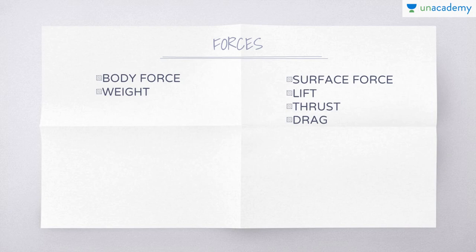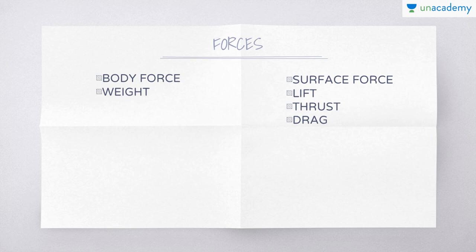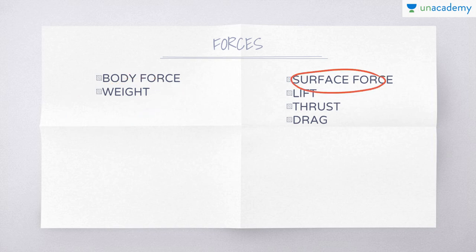Moving ahead to the forces that have an effect on airplanes. There are two general types of forces that may act on a body in unaccelerated or steady flight. They are termed the body force — that is, the weight — and the surface force — that is, lift, thrust, and drag. These four forces are the forces that act on the airplane.